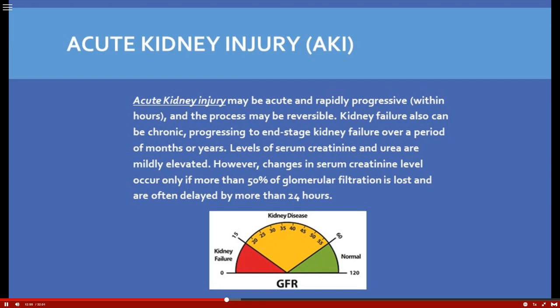The kidneys are the main excretory organ for certain electrolytes. Potassium is mainly excreted by the kidneys, so when kidneys aren't working well, the body retains potassium — resulting in hyperkalemia. Phosphorus is another electrolyte excreted by the kidneys; when they fail, you get hyperphosphatemia with a resultant hypocalcemia, since phosphorus and calcium are reciprocal.